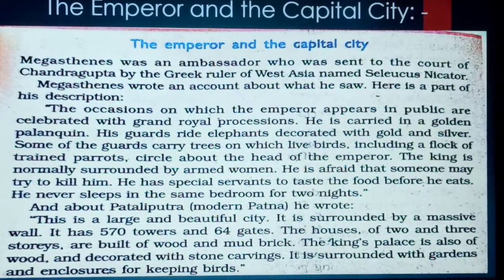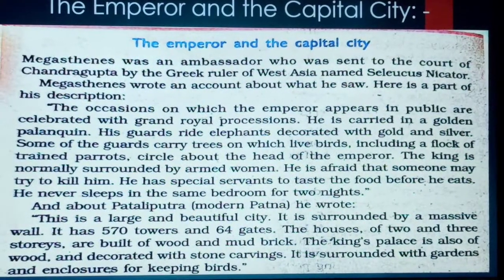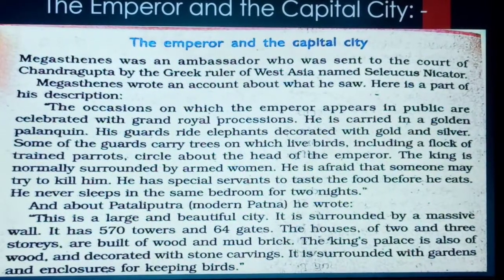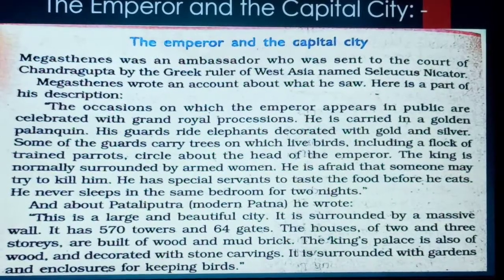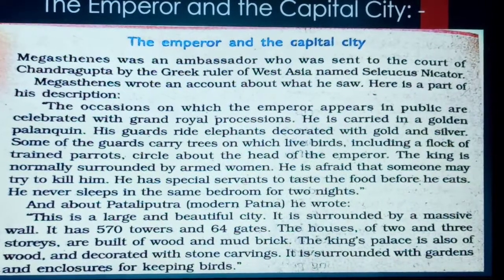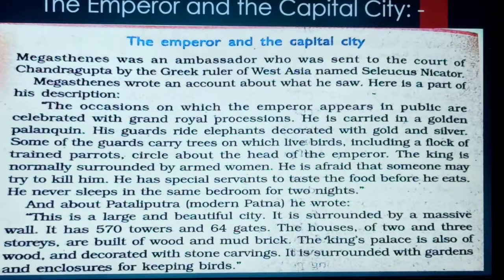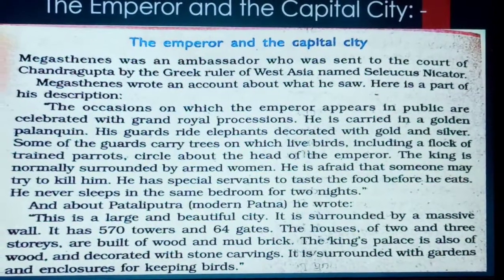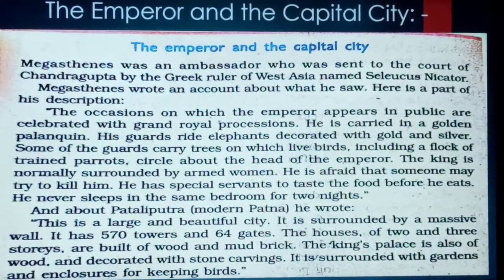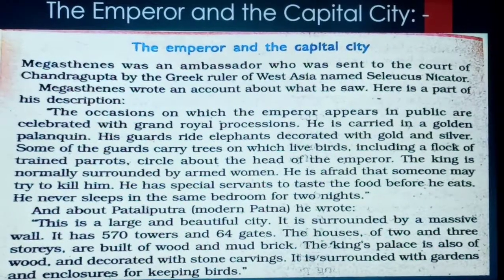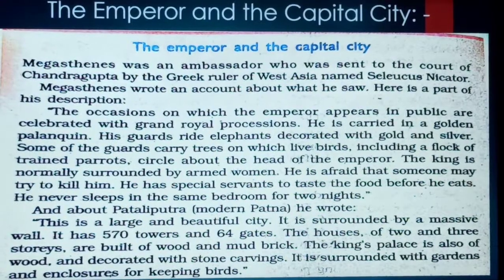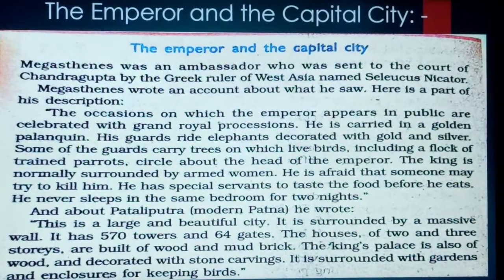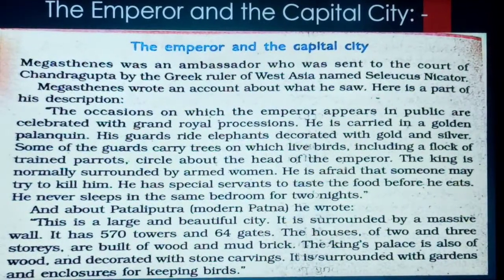He was afraid that someone might try to kill him. He had servants to taste the food before he ate — because enemies could try to add poison to his food. Before the emperor ate anything, servants would taste it first. It is also said that the king never slept in the same bedroom for two nights — if sleeping in one room today, he would be in another room tomorrow.